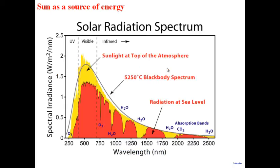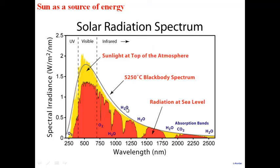Have people seen a diagram like this for a solar cell? It shows the solar spectrum incident on the earth. The yellow one is sunlight at the top of the atmosphere. As light goes through the atmosphere, it gets absorbed — by water vapor, carbon dioxide, and other things. The red one is the radiation which reaches the earth's surface.